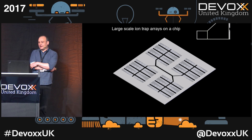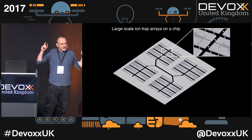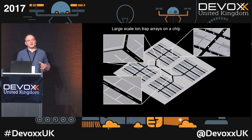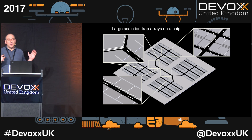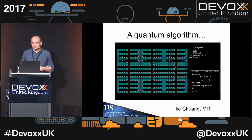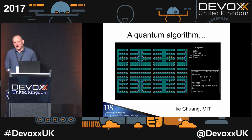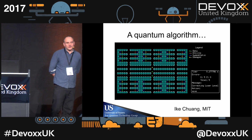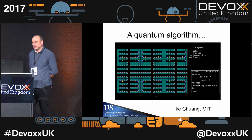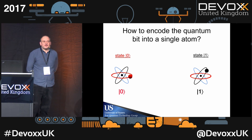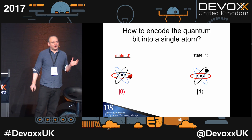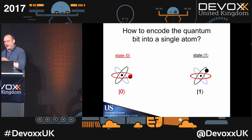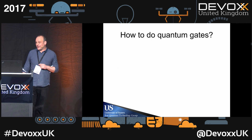Our quantum computer architecture has a memory region where you store ions carrying information, a processing region, and a way to transfer information from memory to processor. A quantum algorithm looks like ions being shuttled around — as I said, like a Pac-Man game — with quantum gates being carried out. We store the information in the spin of the atom, which is basically the electron orbit around the nucleus. Different orbits correspond to different states, and these states are very resilient to the environment.